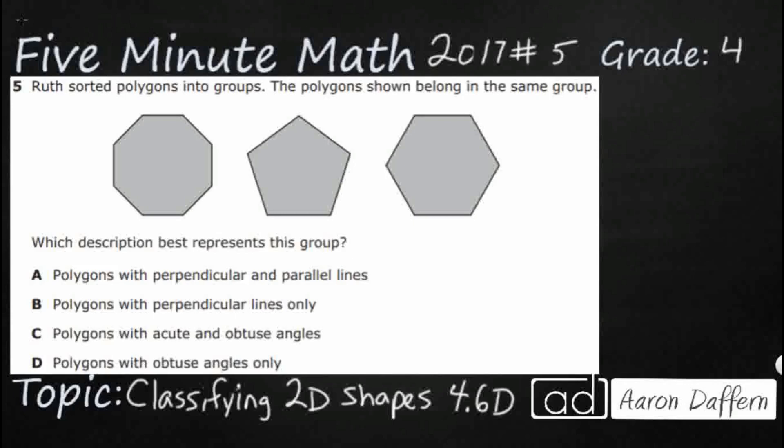Hello and welcome to 5-Minute Math. Today we are looking at the fourth grade concept of classifying 2D shapes. This is standard 4.6D in the great state of Texas and we are using item number five of the 2017 released STAR test.